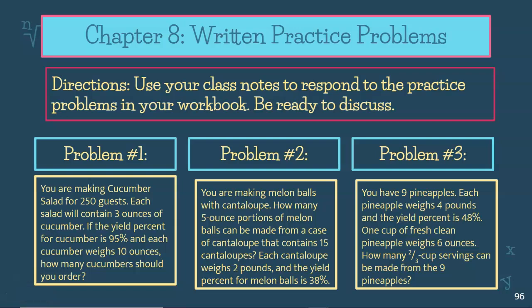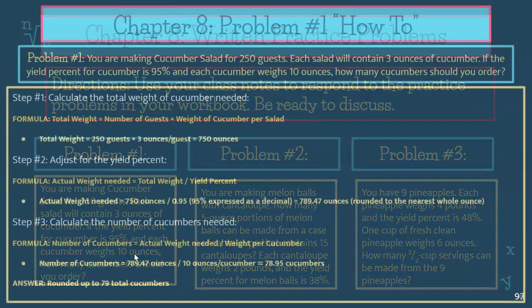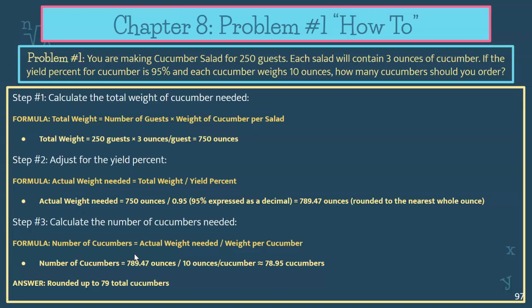Hello, this screencast is on the chapter eight written practice problems that will prepare you for the culinary math dual credit exam. In addition, it will check for understanding. Like I've said in the other videos, you can use this video to help check your work or follow along if you are confused. Make sure you are referencing chapter seven steps and all the steps provided in chapter eight for doing yield and applying yield percent. All right, let's do problem number one.